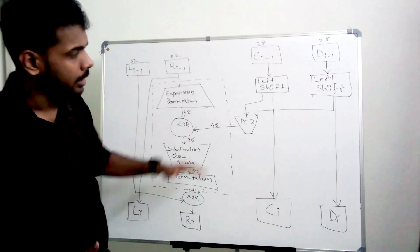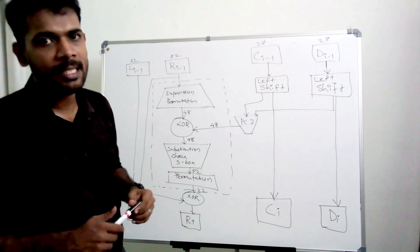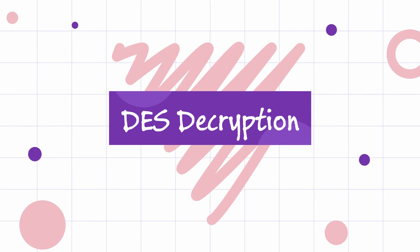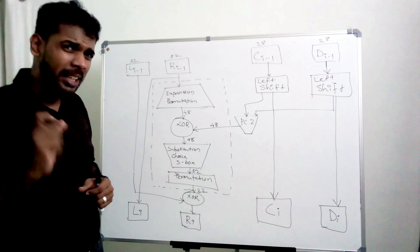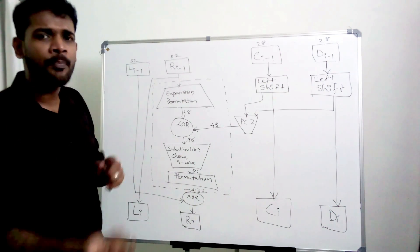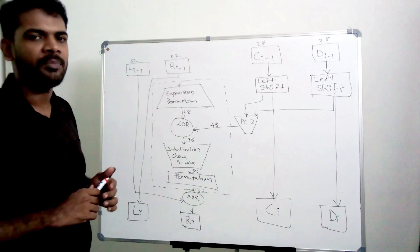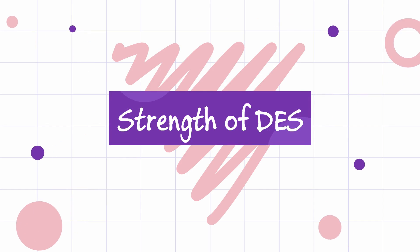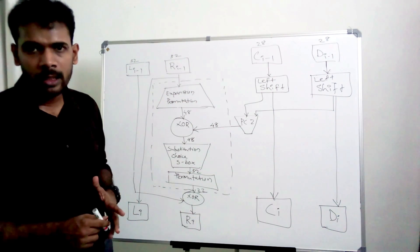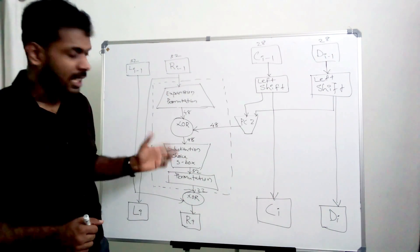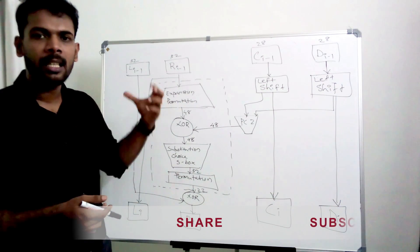After the 16th round, the inverse of the initial permutation is applied to produce the final ciphertext. The strength of DES lies in its use of permutation and substitution combined across 16 rounds.